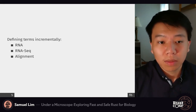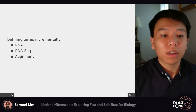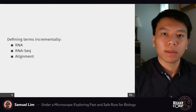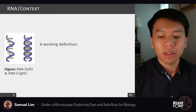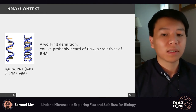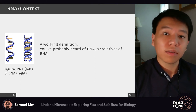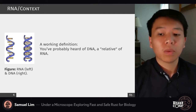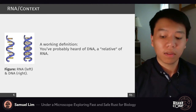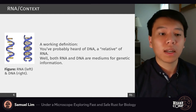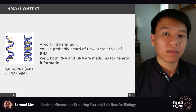There are quite a few different terms here, so we'll define them incrementally. We'll start from RNA and then see why sequencing is important and talk a little bit about alignment along the way. As a working definition of RNA: you've probably heard of DNA first and more often. Both RNA and DNA are mediums for genetic information, although they come in slightly different forms.